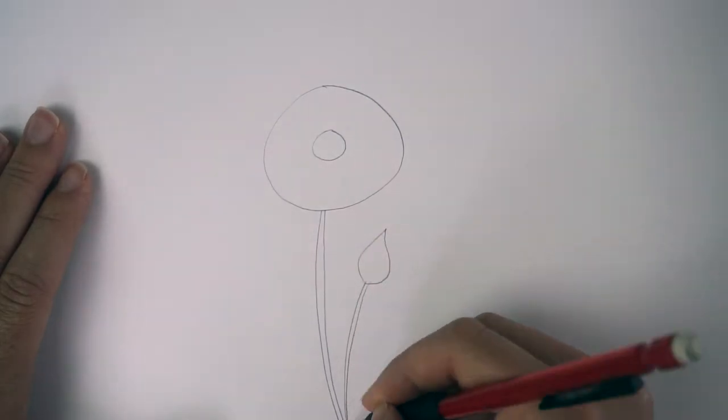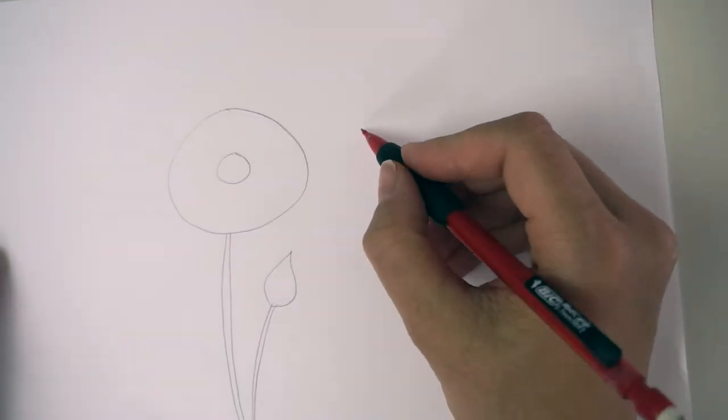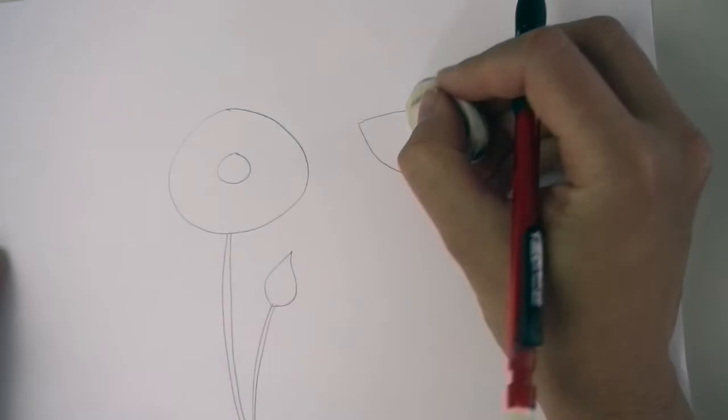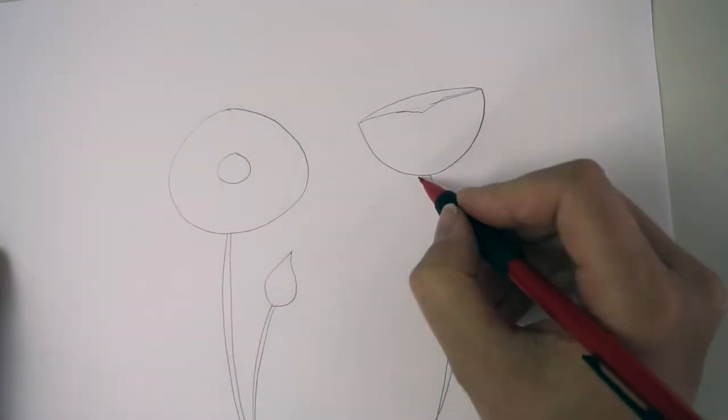You just do a big circle with a smaller circle in the middle and there you have your poppy flower. This you can use if you want to draw very many poppy flowers or if you want to draw it together with kids.